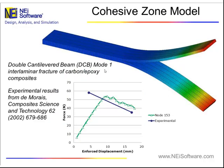One particular validation we ran is a mode one fracture test for a carbon fiber double cantilever beam. We're pulling apart the ends of this double cantilever beam — the top portion is pulled up and the bottom portion is pulled down. The debonding will initiate at the front of the specimen and then propagate through the length of the entire DCB. Since we're using a forced displacement, the more the crack grows, the less load is required to peel the rest of the structure apart. The NEI natural results follow the displacement response pretty closely and match the experimental results obtained from the literature.